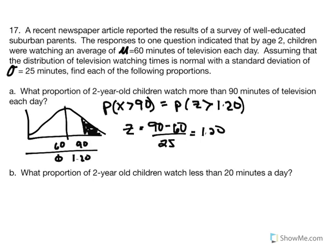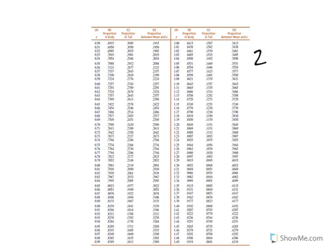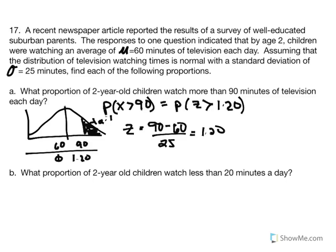That's the area of the normal distribution we're interested in, and given the sketch, this is the tail. We enter the table using a Z score of 1.20 and report the tail. The proportion of the tail is 0.1151. So the probability is 0.1151 — there's an 11.51% chance of selecting a two-year-old that watches more than 90 minutes of television per day. The proportion of two-year-olds that watch more than 90 minutes per day equals 0.1151.